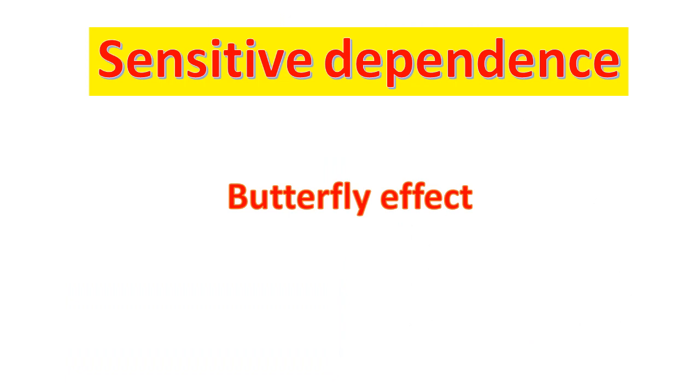Next we will see another very important characteristic that defines chaos: this is sensitivity to initial conditions. It is explained with a metaphoric example of the butterfly effect.